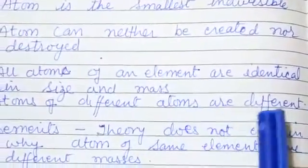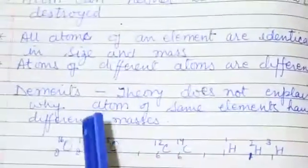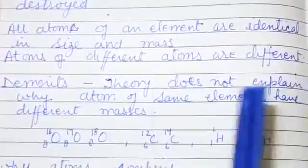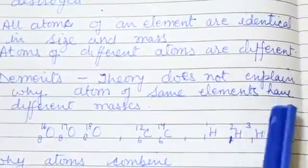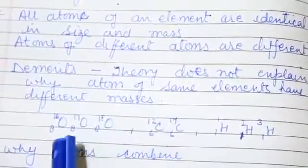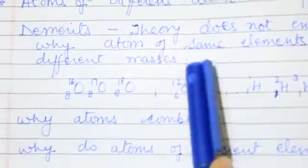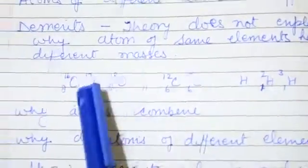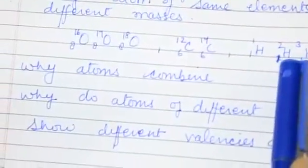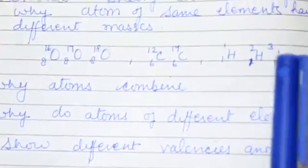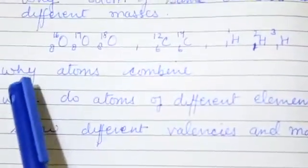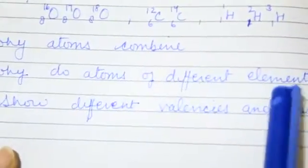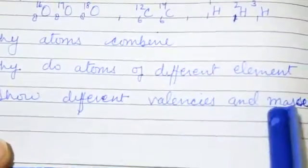Atoms of different elements are different. The demerits of Dalton theory is, the theory does not explain why atoms of same element have different masses, like the isotopes of oxygen, carbon and hydrogen. Second is why atoms combine, third is why do atoms of different elements show different valencies and masses.